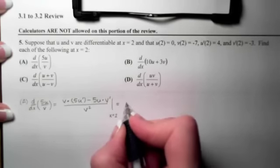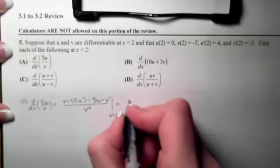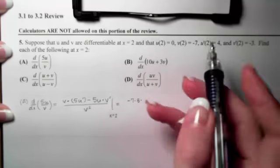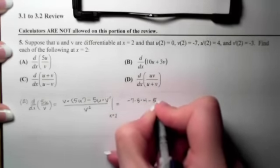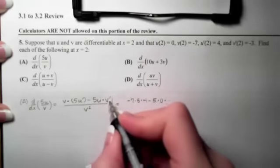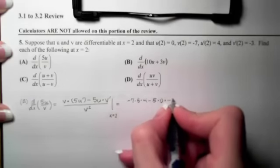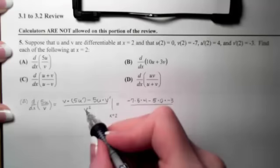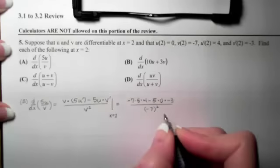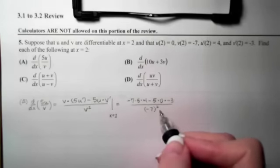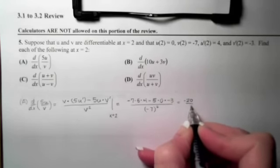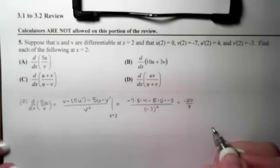I will have that derivative equals my low d high minus my high d low over my low squared. Then I want to evaluate when x is 2. That means I'm going to have v of 2, which is negative 7, times 5 times the derivative of u, which is 4, minus 5 times u at 2, which is 0, times v prime at 2, which is negative 3. That is all over v of 2, which is negative 7, squared. We can see that we can cancel out a negative 7, and we will get a 20 over a negative 7.